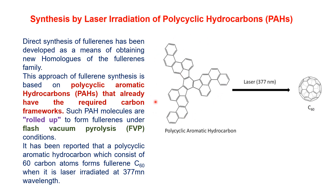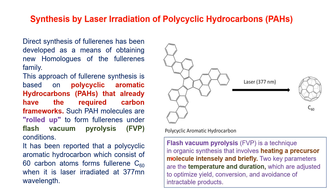This approach for fullerene synthesis is based on polycyclic aromatic hydrocarbons that already have the required C60 carbon framework. Such PAH molecules are rolled up using laser irradiation, which rolls up the PAH to directly produce C60. The mechanism involved is flash vacuum pyrolysis — a technique in organic synthesis involving intense and brief heating of a precursor molecule. Laser light is used for heating the precursor molecule, causing it to roll up into C60.